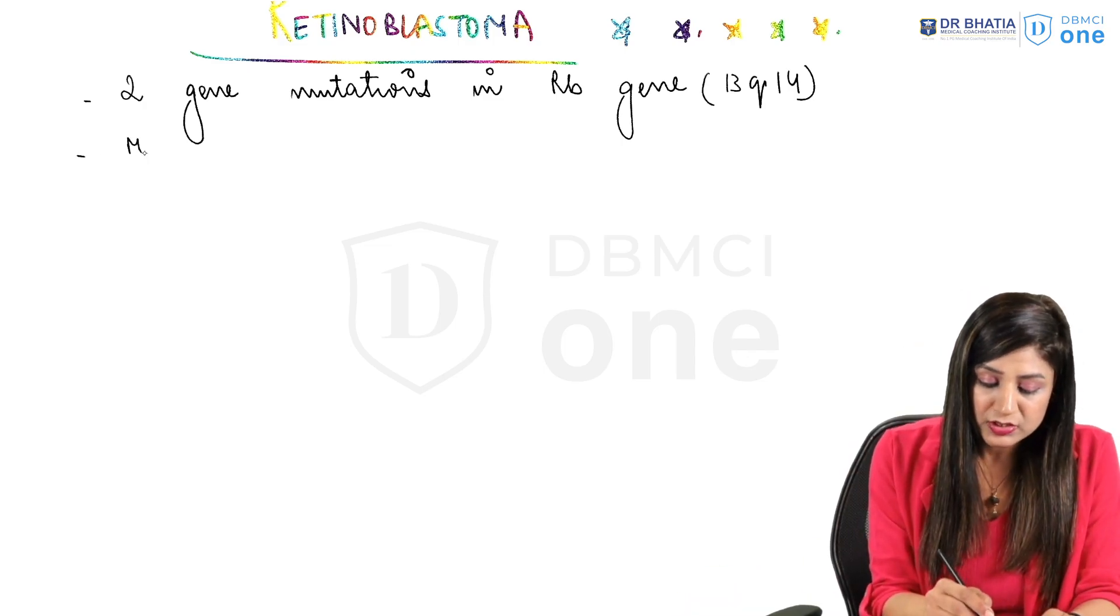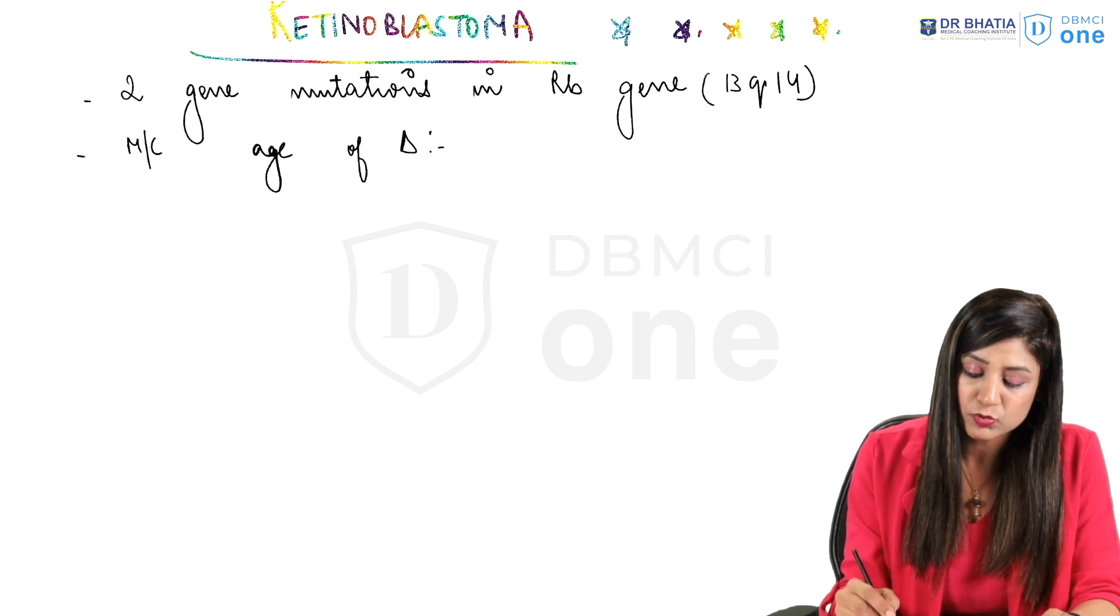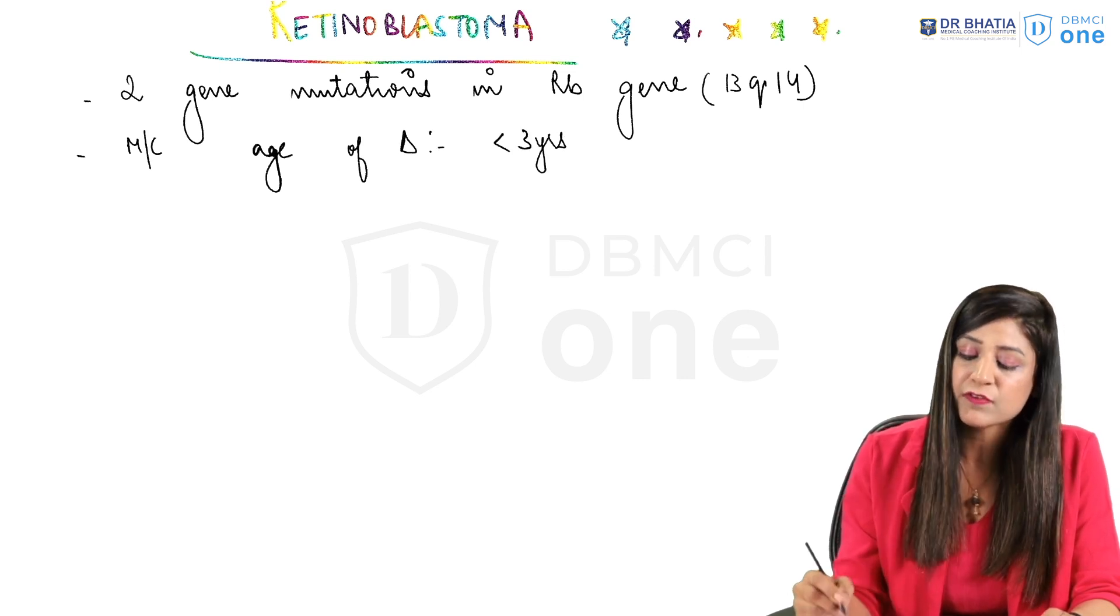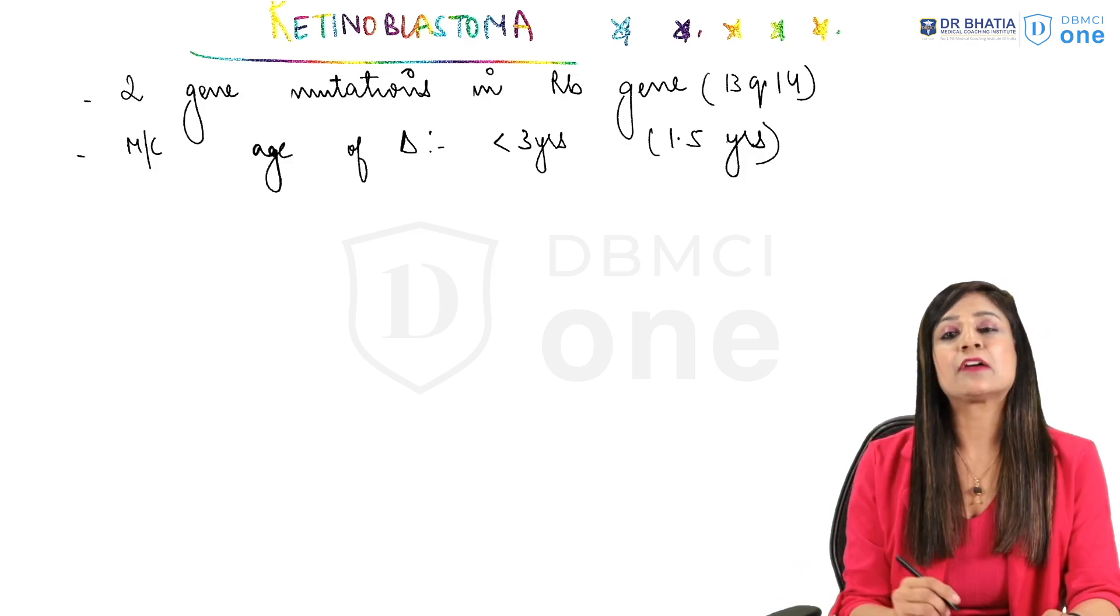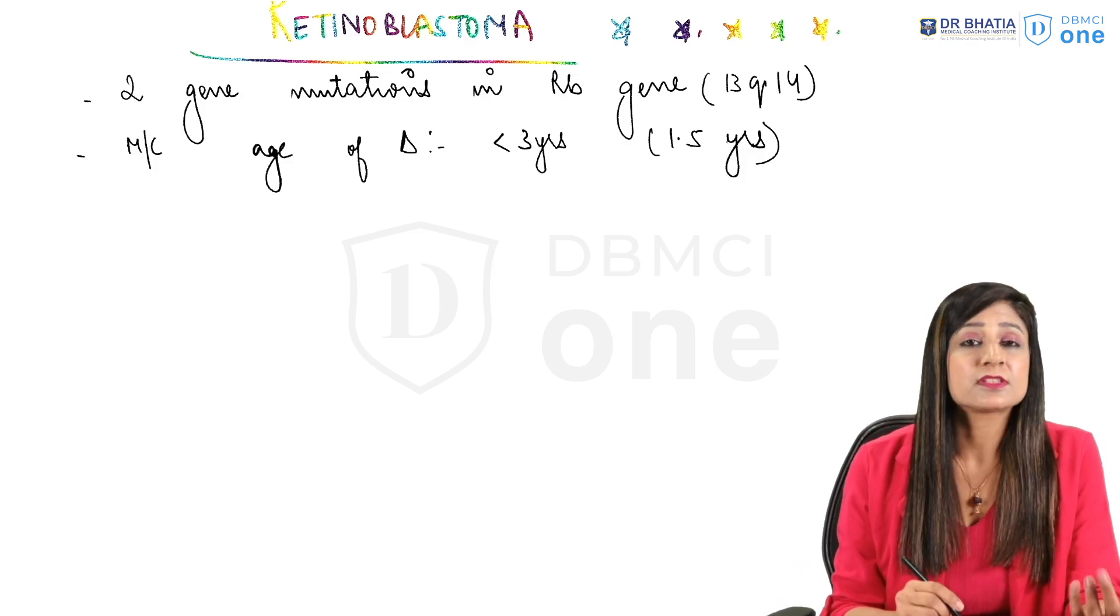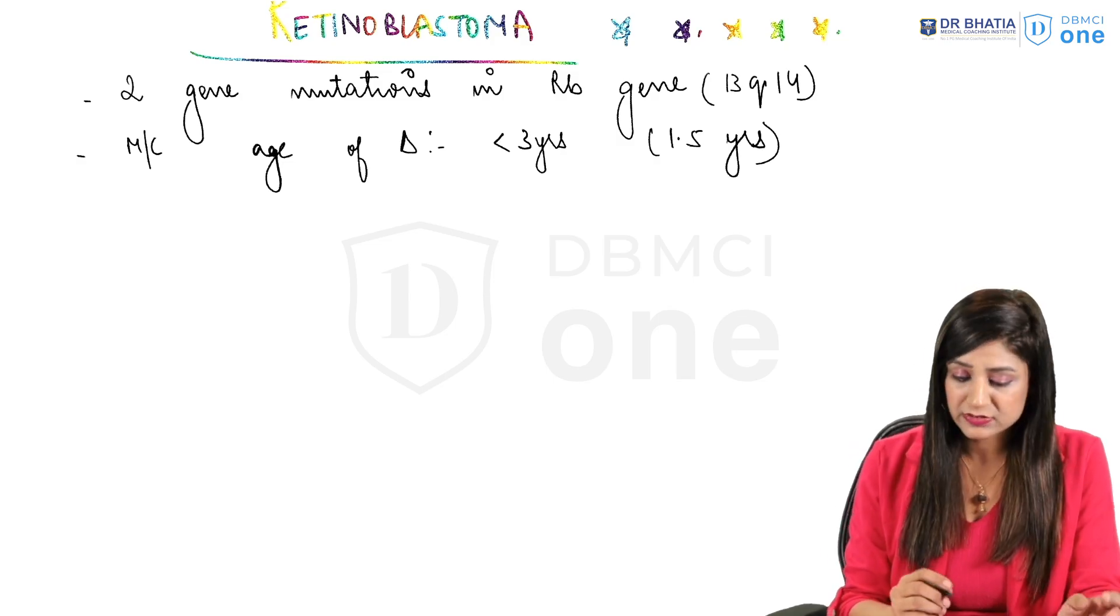The most common age of diagnosis of this baby is usually less than three years, specifically one and a half years. Usually this one and a half year old baby or baby's guardian will come with the leukocoria, calcification, and all those things.